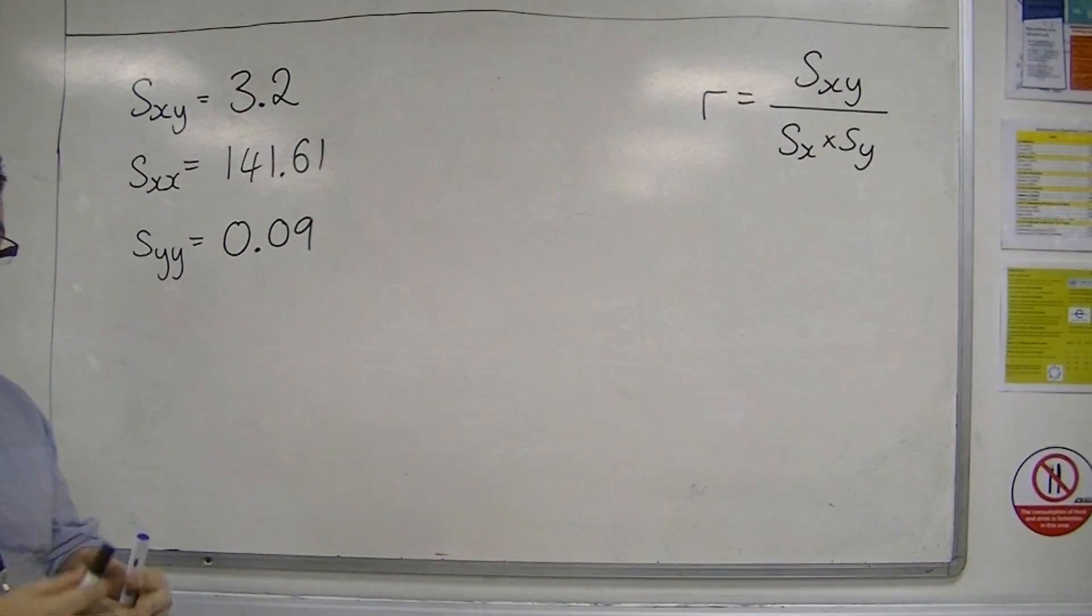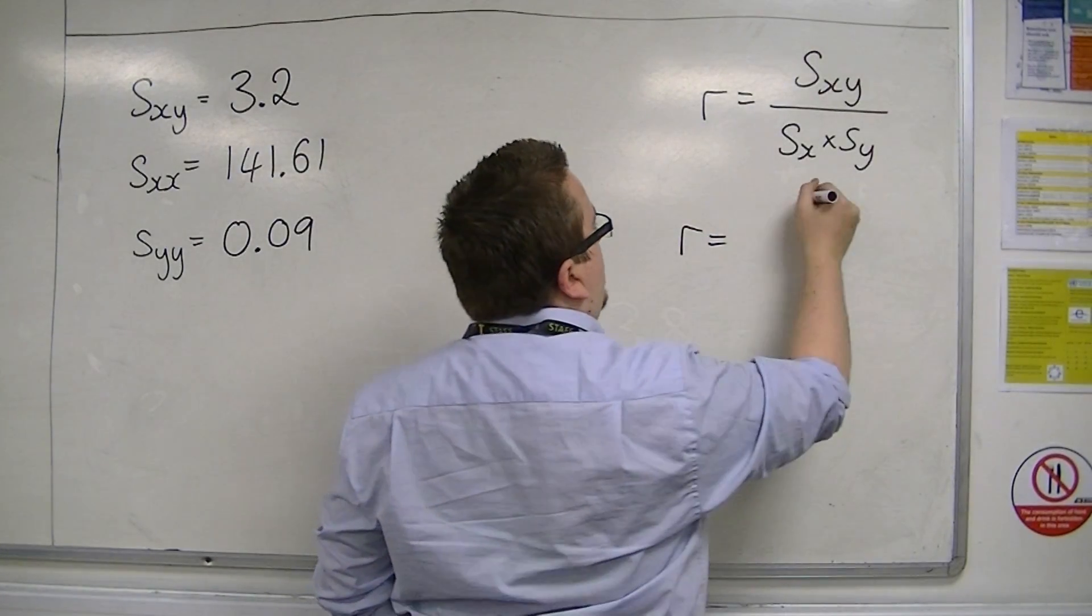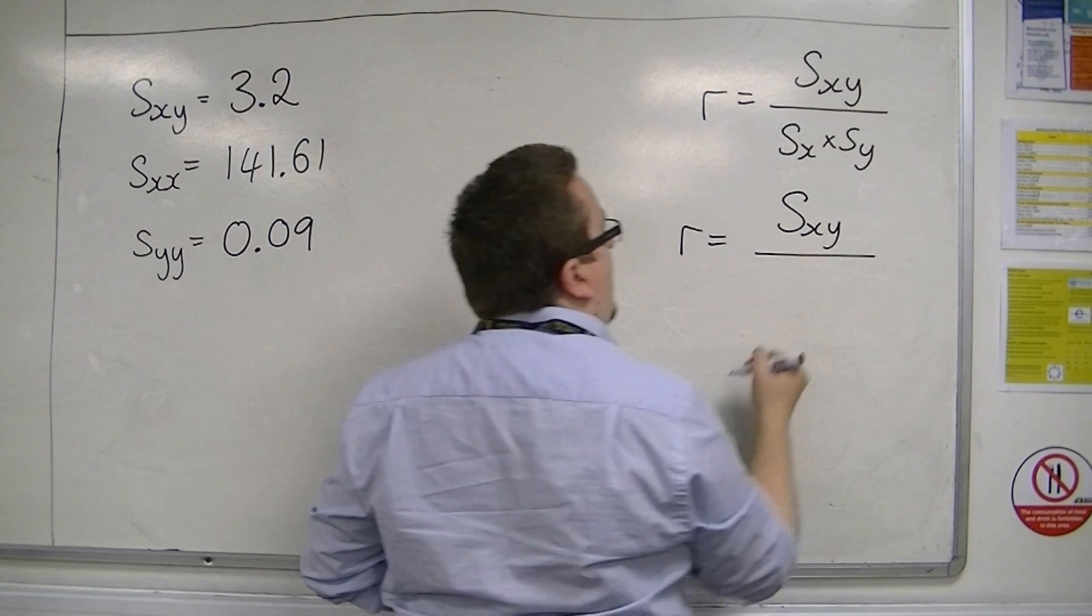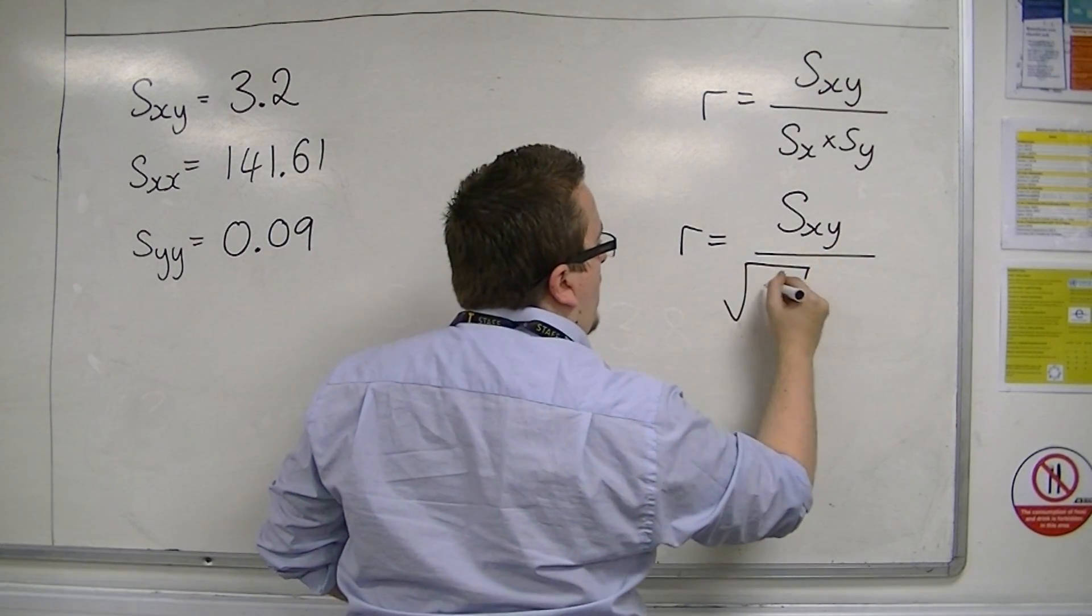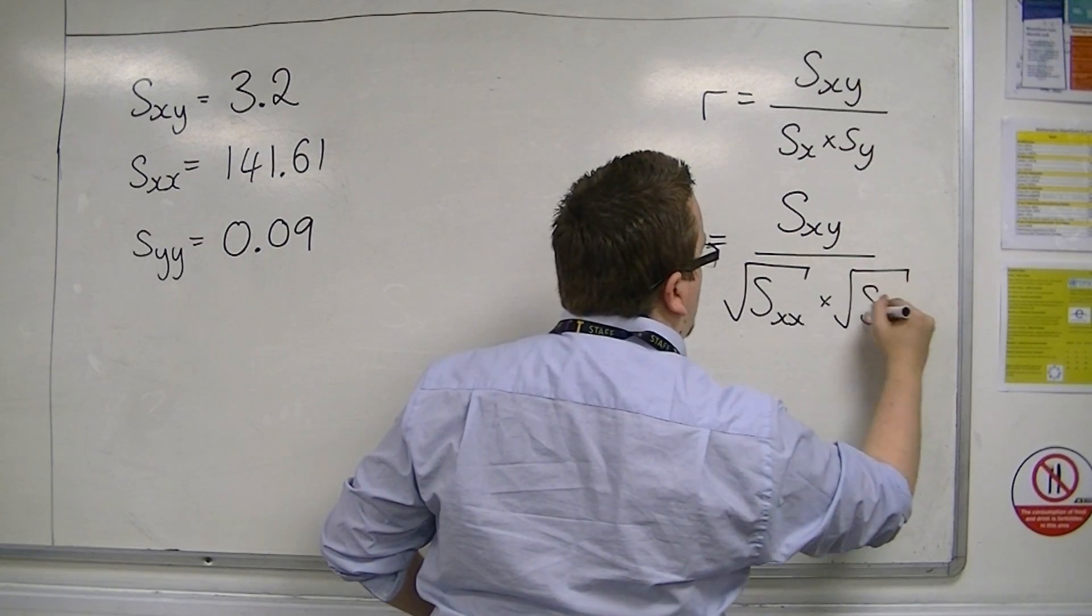So the formula that you're given in the formula booklet, on page 13, says that R is Sxy over the square root of Sxx times the square root of Syy.